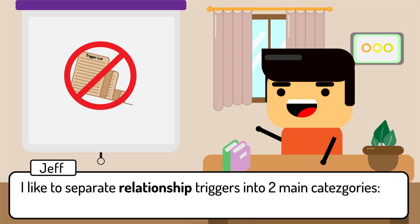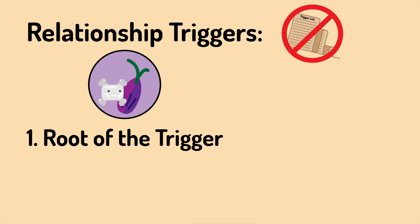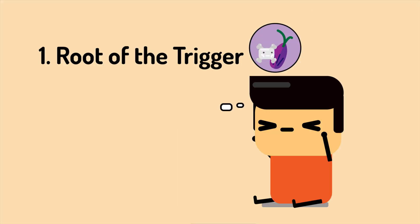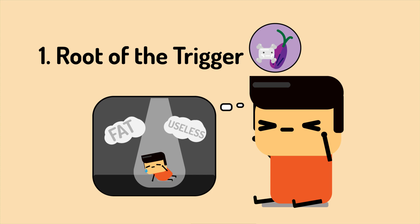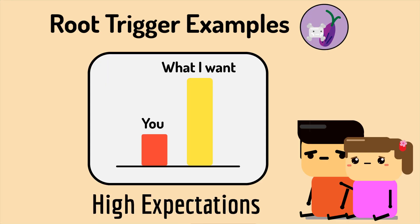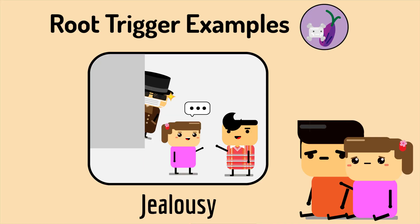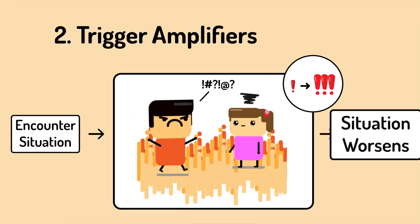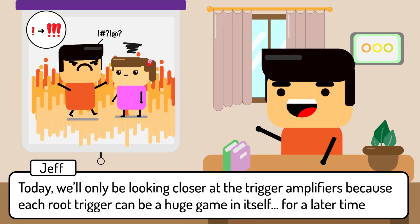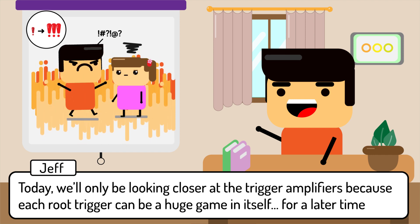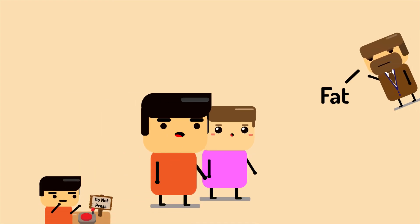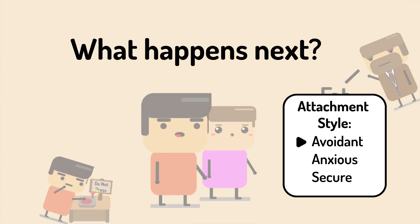I like to separate relationship triggers into two main categories: one, the root of the trigger, and two, the trigger amplifier. The root of the trigger includes things deeply embedded within ourselves — high expectations, clashing priorities and values, jealousy, or fear of loss. Trigger amplifiers are reactions that make the trigger worse, lowering the environment. Today we'll only look closer at trigger amplifiers, because each root trigger can be a huge game in itself, to be covered at a later time.